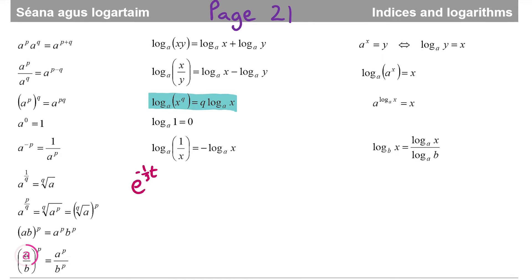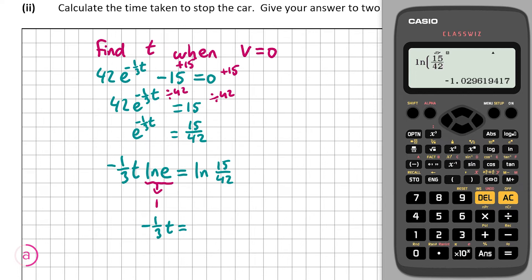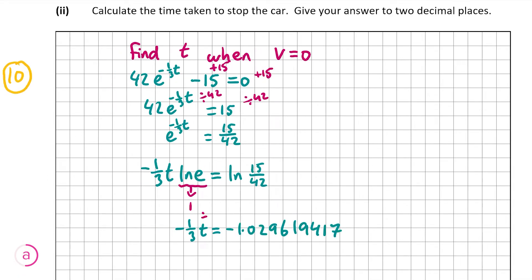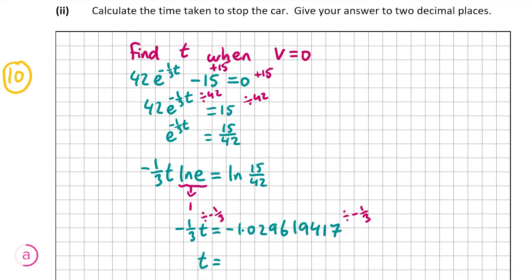Applying the formula: ln(e^(−t/3)) = −t/3 × ln(e). So −(t/3) × ln(e) = ln(15/42). Since ln(e) = 1, we have −t/3 = ln(15/42). Using a calculator, ln(15/42) = −1.029619417. Dividing both sides by −1/3, we get t = 3.088858252. Correct to two decimal places, t = 3.09 seconds. That's our answer for Question A, Part 2.